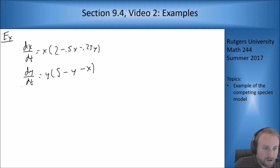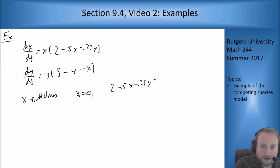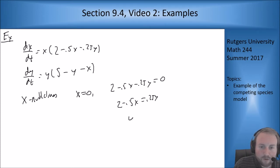For the x nullclines I get x equals 0, and I get 2 minus 0.5x minus 0.25y equals 0. That gives 2 minus 0.5x equals 0.25y, or y equals 8 minus 2x, which I can just graph.